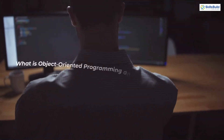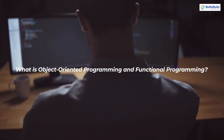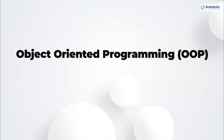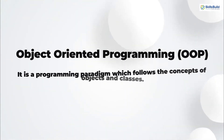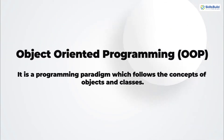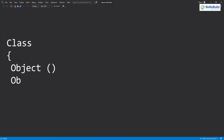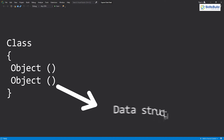First of all, let's understand what object oriented programming and functional programming are. Object oriented programming, also known as OOP, is a programming technique or methodology in which we make our programs with the help of objects and classes. A class is like a blueprint in which we create different objects, and those objects are used to represent things and can be data structures. Objects have different attributes to hold data.